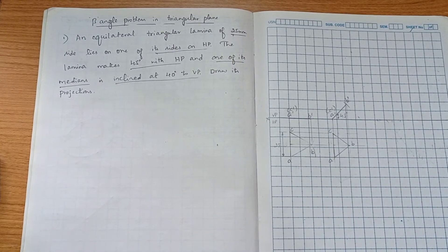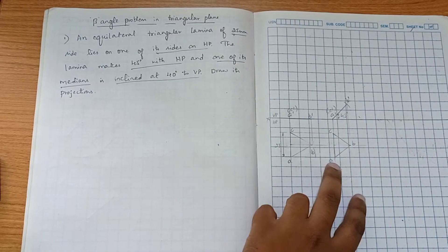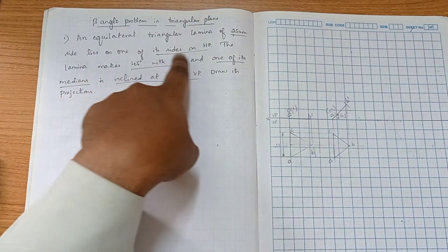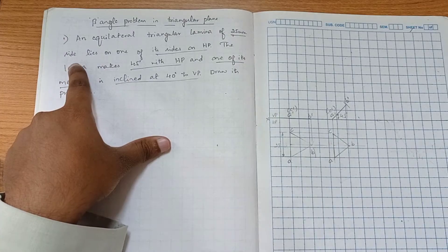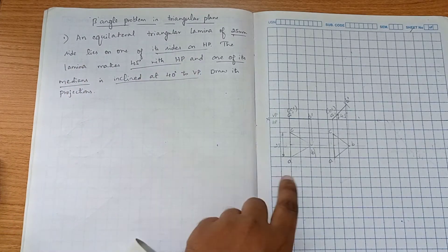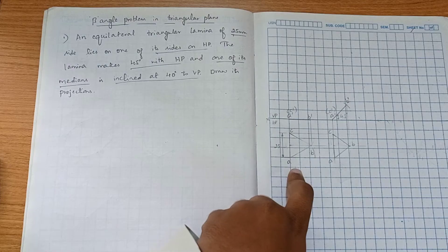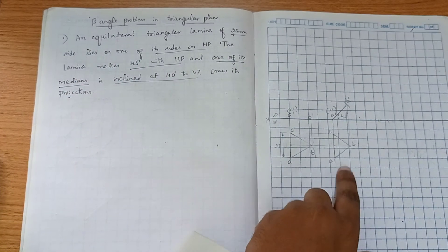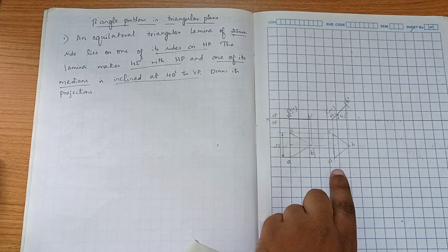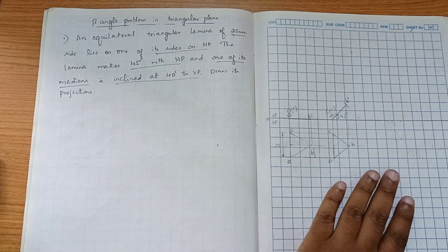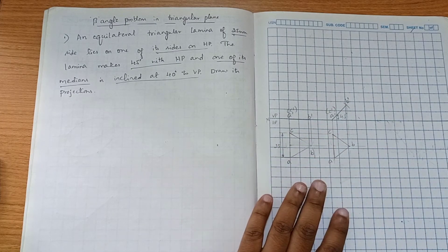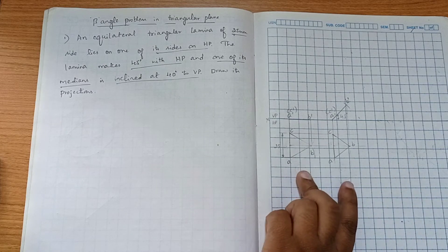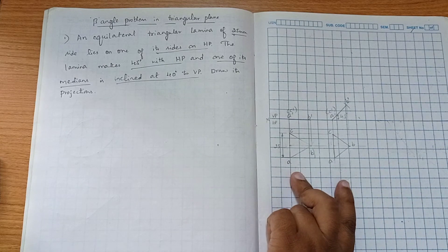In this bit angle problem, the first two positions will remain the same. You can see an equilateral triangular lamina of dimension 25 lies on one of its sides on HP. We constructed the first position — top and front view. Next, the lamina makes 45 degrees with HP, so that inclination is also shown. The only change with respect to a normal type problem is in the third position.